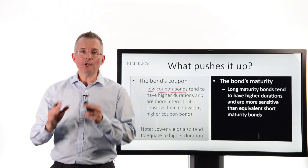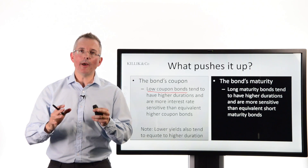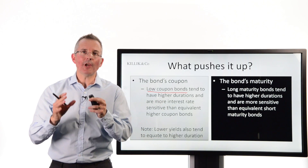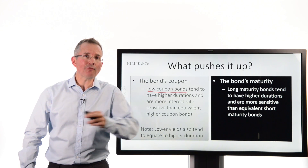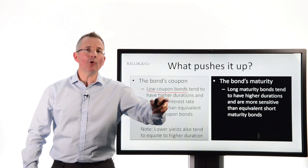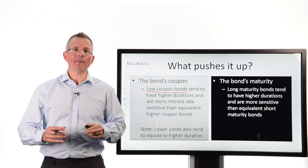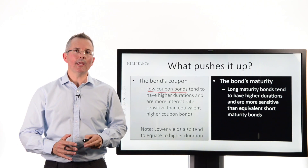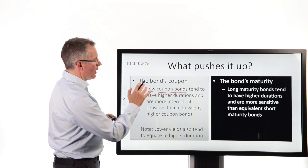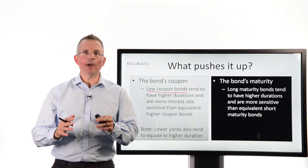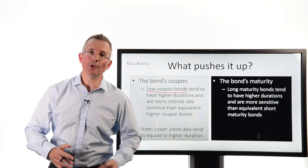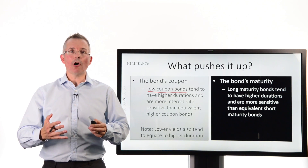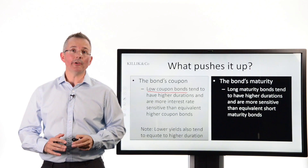On the other side: maturity. How long has the bond got to go until it's bought back by the issuer? As a rule of thumb, long maturity bonds tend to have higher durations. They are more sensitive to changes in interest rates because there are more cash flows to come from the bond. The longer you have to wait to receive your cash, the riskier the instrument is. So a low coupon bond with a long maturity — say, a 1% coupon and 30 years to maturity — is going to be relatively interest rate sensitive compared to, say, something with a 5% coupon and a much shorter maturity.